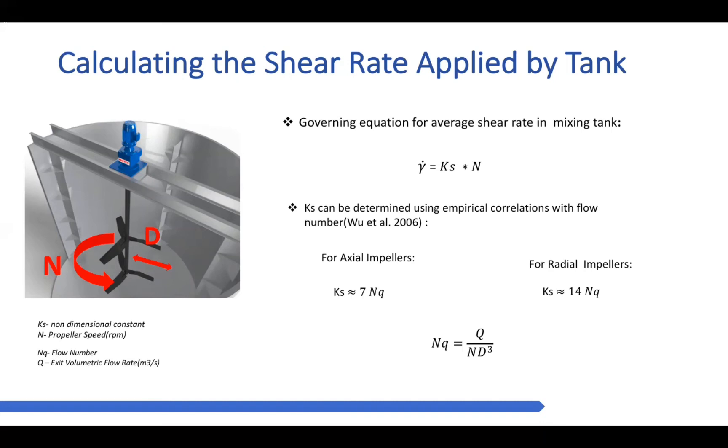So with having the freedom of controlling your propeller speed, the challenge really lies on how are we able to determine the Ks value itself? Well, luckily, there appears to be a flow rate of interest. There really exists a correlation with the Ks value, and a non-dimensional number known as the flow number, which actually accounts for the difference in the flow conditions within your tank. This dimensional number can easily be calculated from knowing the exit volumetric flow rate at the blade surface, alongside with knowing the rotational speed and the diameter of the blade.